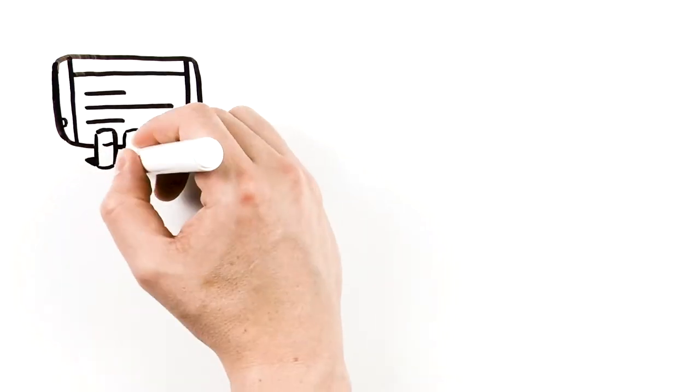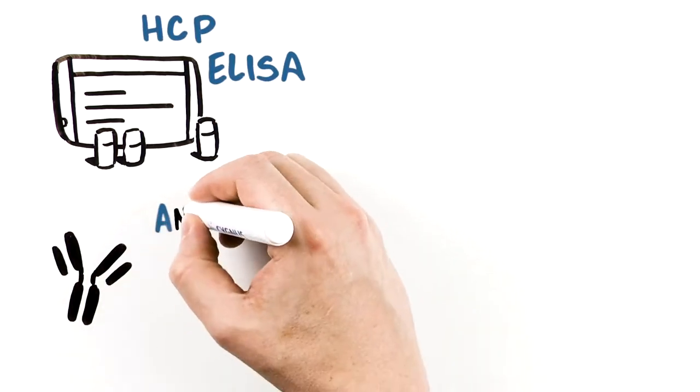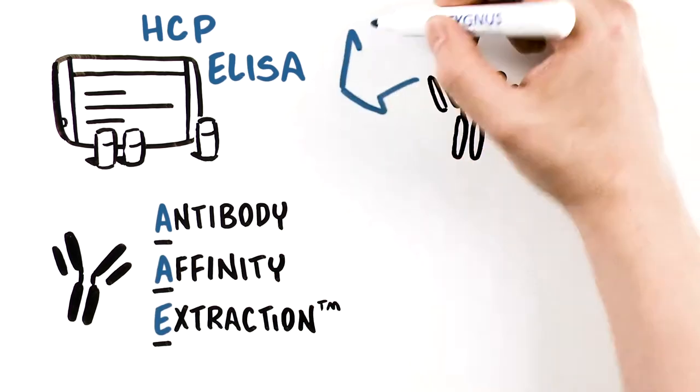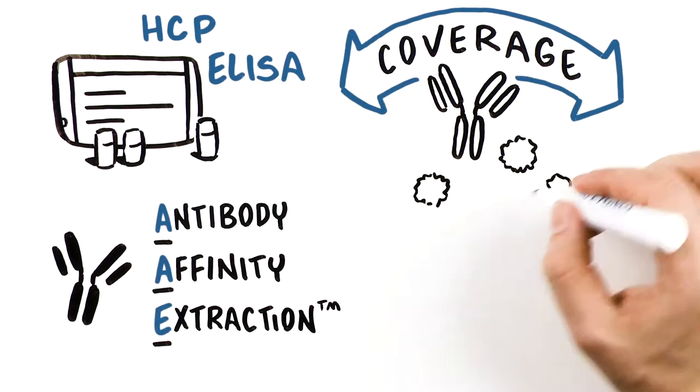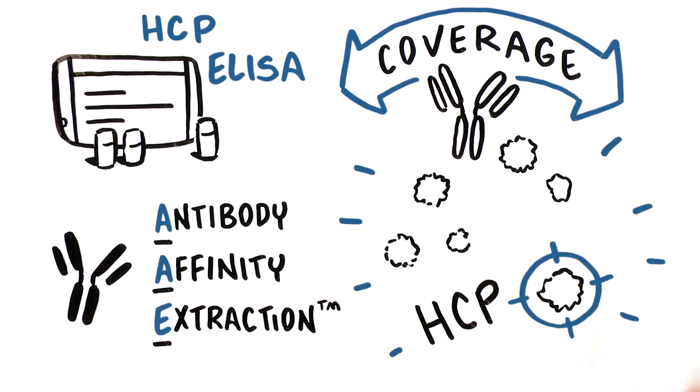In our last video, we discussed how host cell protein ELISA and orthogonal methods like antibody affinity extraction, or AAE, are used to determine antibody coverage and detect all significant host cell proteins, or HCPs, down to the nanogram level.